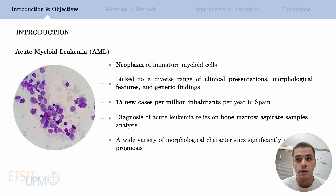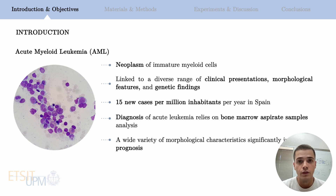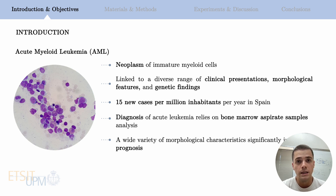In terms of introduction, Acute Myeloid Leukemia, or AML, is a hematopoietic malignancy characterized by peripheral blood cytopenia, morphological dysplasia and impaired hematopoiesis. It presents a wide variety of clinical presentations, morphological features and genetic findings, with a relative survival rate of 15 new cases per million inhabitants per year. Importantly, diagnosis and prognosis depend on the analysis of bone marrow and peripheral smear images, meaning both processes are subject to high inter-observer variability.